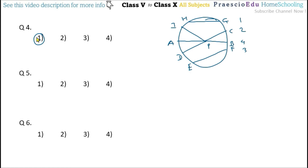Question number five: how many radii are there in this circle? Radii is the plural of radius. IP is one, AP is two, DP is three, CP is four, and BP is five. So there are five radii, and five is given in option number three.